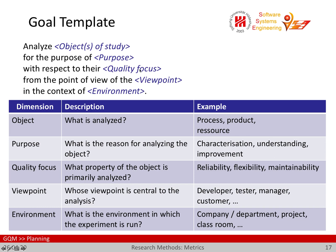Then there is a quality focus — what property of the object we want to primarily analyze. Examples here are clearly software engineering-oriented: reliability, flexibility, maintainability, effort, etc. But this can of course be extended to other areas and disciplines. Then we have a certain viewpoint that we are interested in — like a developer, a tester, a manager, or a customer. Again, these are software engineering specific but can be extended to other situations.